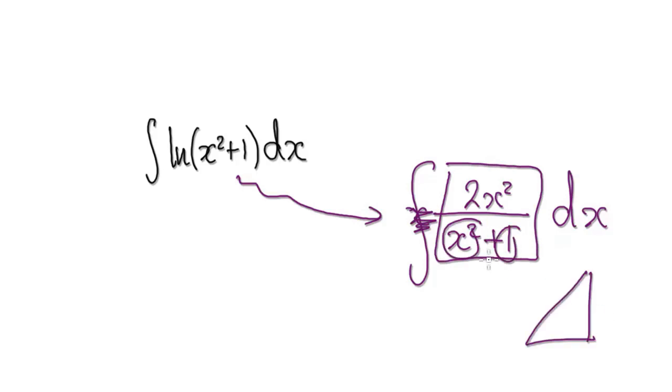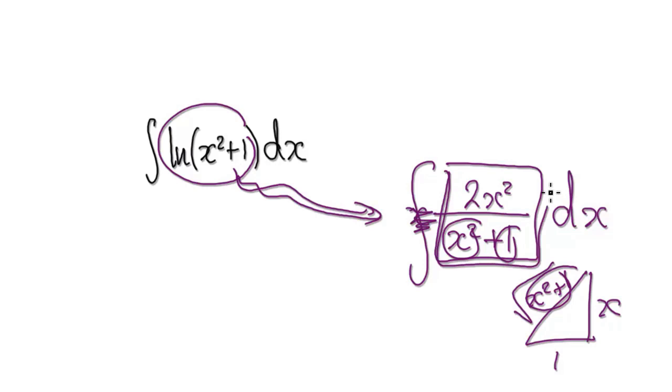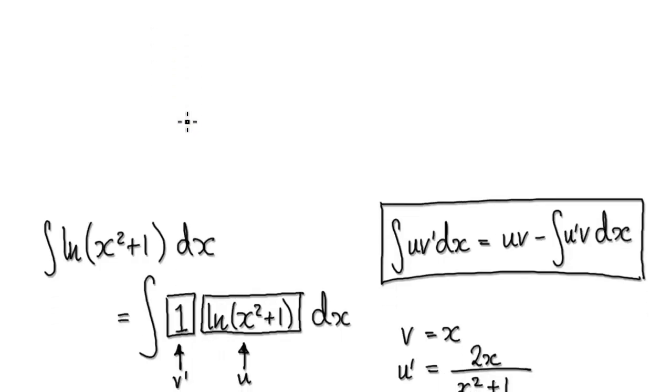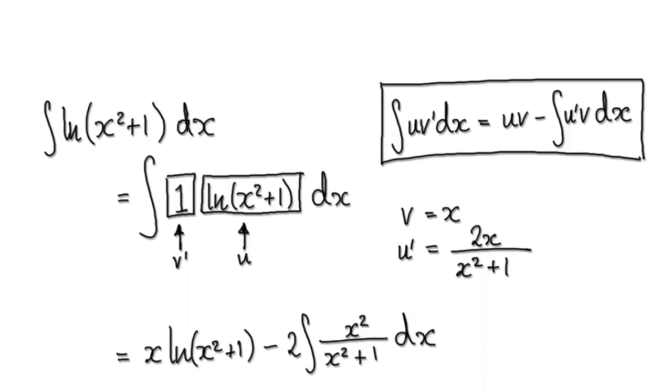You see, this x squared plus 1 looks very familiar. It's of this form here, x squared plus 1. So the point is, you're trying to integrate this, but if you look at its derivative, we can make use of its derivative. So by knowing the fact that this derivative is useful, you should have a hunch that you should use integration by parts.